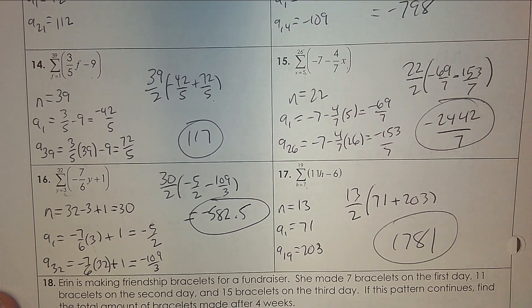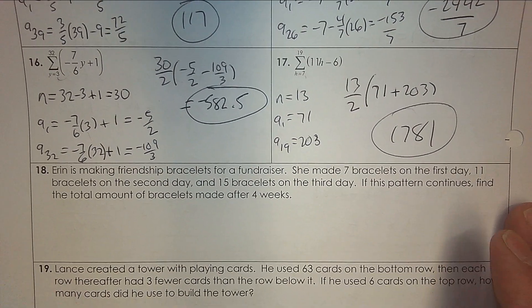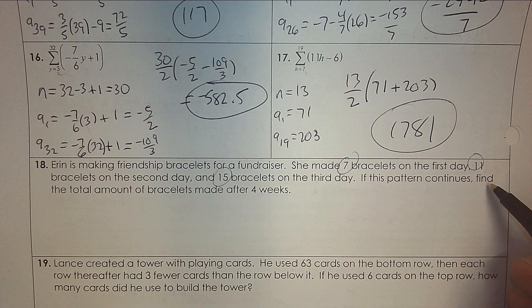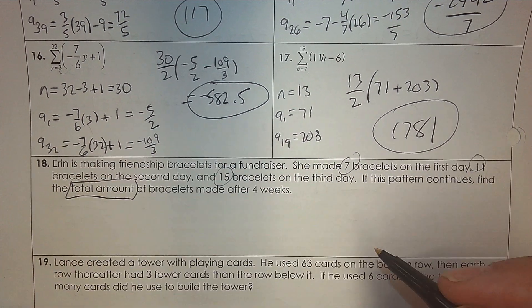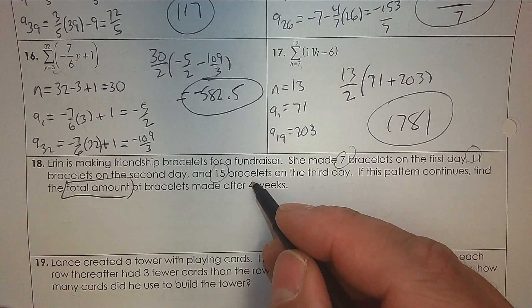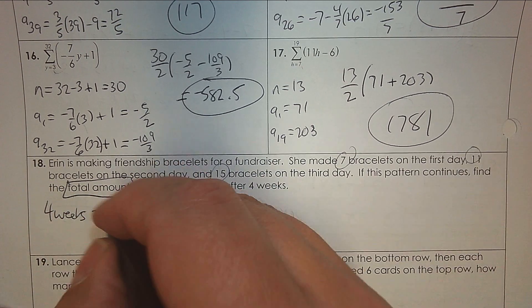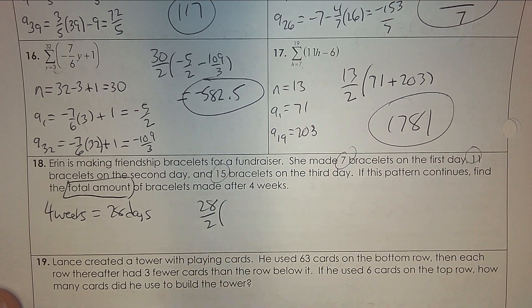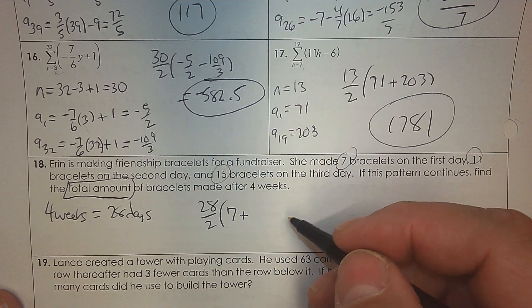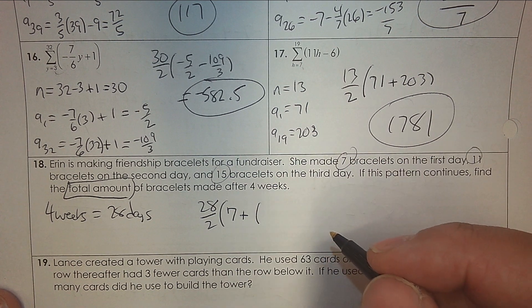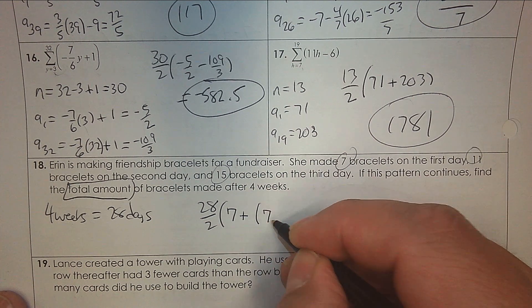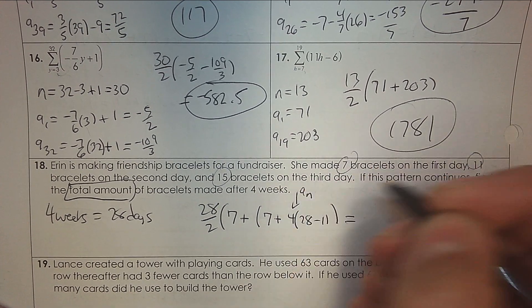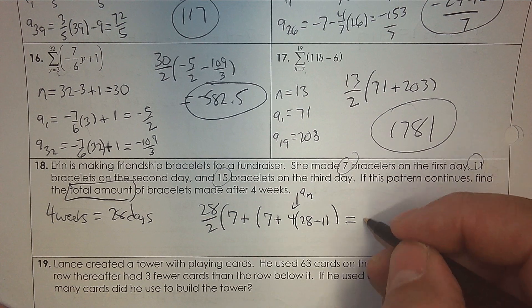Let's finish off with some story problems. Erin is making a friendship bracelet for a fundraiser. She made 7 bracelets on the first day, 11 on the second, 15 on the third — going up by 4 each time. That's arithmetic. Find the total amount after 4 weeks. Four weeks is 28 days, so we have 28 terms divided by 2. On the first day she made 7. Use the rule: 7 plus 4 times (28 minus 1). Put that all in the calculator — and she made 1,708 bracelets in total.